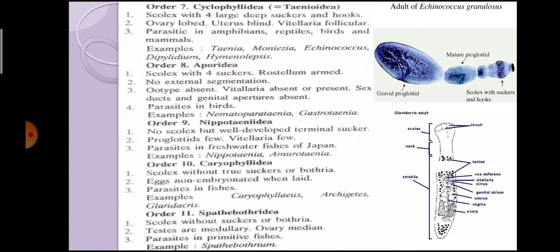Next is Order Nippotaeniida. In this, there is no scolex, but a well-developed terminal sucker is present. Proglottids are very few, and vitelline area is also limited. They are parasites in freshwater fishes of Japan. Example is Nippotaenia, and another example is Amurotaenia.